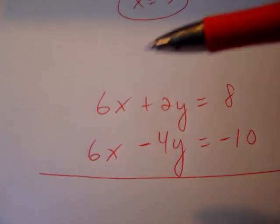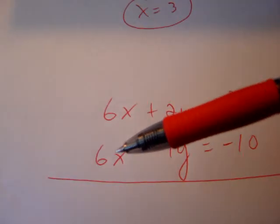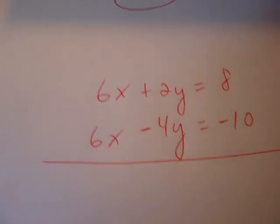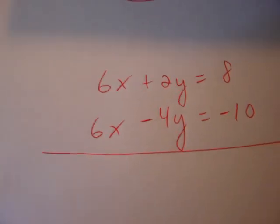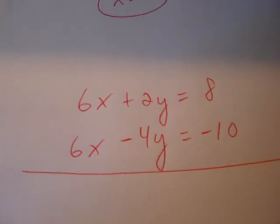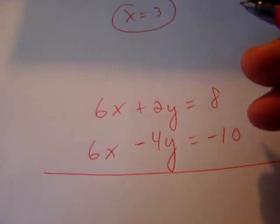We can't add here because if we did 6x plus 6x, we'd get 12x. Our whole goal is to get our variable to drop out. In this instance, we want the x variable to drop out. So, what do we do here? How do we get x to go away? Well, adding doesn't work, so we're going to have to subtract.